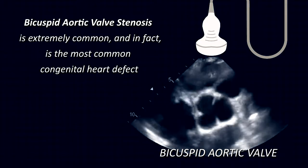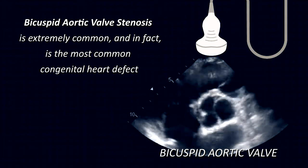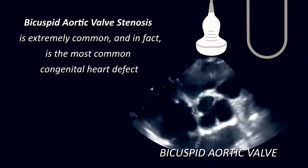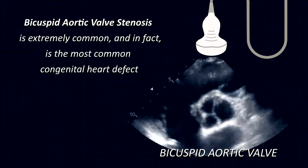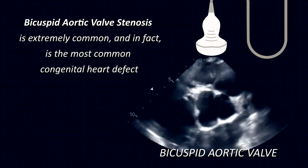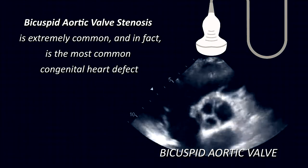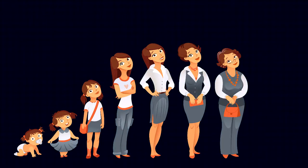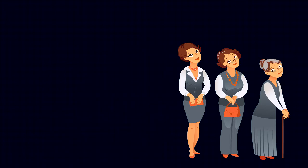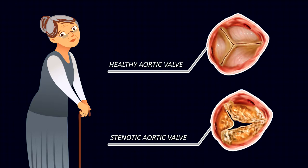As time goes by, usually between the fourth and sixth decades of life, a bicuspid valve can become narrowed or stenotic — called bicuspid aortic valve stenosis. This is the most common congenital heart defect. If you've been told you have a bicuspid aortic valve, you're in good company with Arnold Schwarzenegger, Barbara Walters, and other celebrities. Another common cause of aortic valve stenosis is aging — just living long enough can cause it.